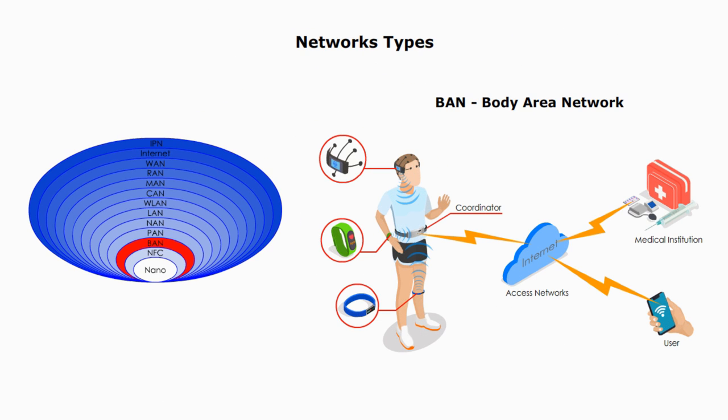Then, a body area network also refers to body sensor network. These sensors are in or on our human body, such as blood pressure sensors, ECG sensors, body temperature sensors,